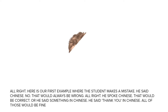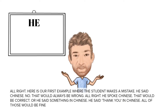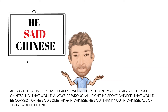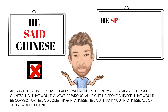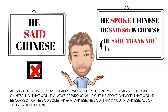Here's our first example where the student makes a mistake. He said Chinese. No, that would always be wrong. He spoke Chinese — that would be correct. Or he said something in Chinese, like he said thank you in Chinese. All of those would be fine.